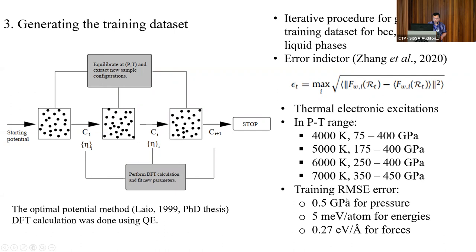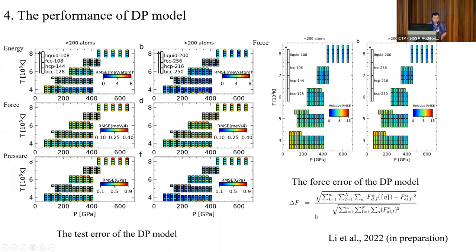After the training dataset is generated, we retrain a single neural network potential. The final training root mean squared errors are: approximately 0.5 GPa for pressure, about 5 meV/atom for energy, and about 0.27 eV/Å for force. To characterize the performance of the DP model, we run MD simulations for different phases and conditions, select configurations, label them with DFT, and compare predictions to calculate the test error. For systems with fewer than 200 atoms, the test error is around 5 meV/atom for energy, 0.3 eV/Å for force, and 0.6 GPa for pressure.